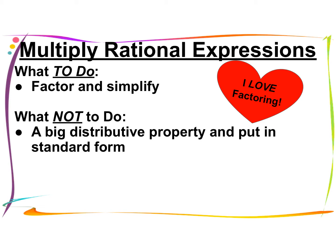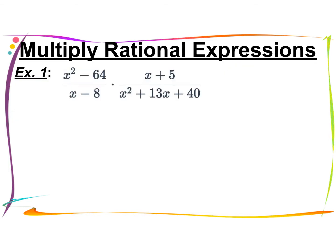You're getting great at factoring, so you should be successful on this. What we don't want to do is use a big distributive property and put it back into standard form, because then we can't simplify anything — we can't cross terms off. So this is what not to do. You're not doing a big multiplication because then you get into standard form and you can't be crossing things off.